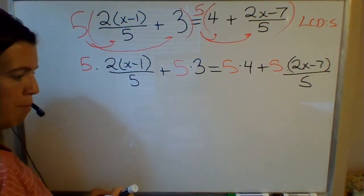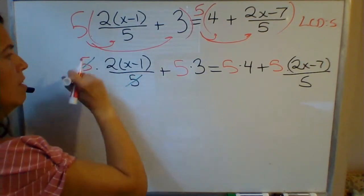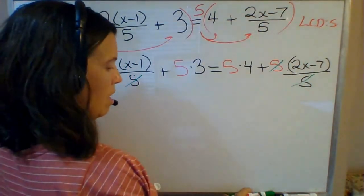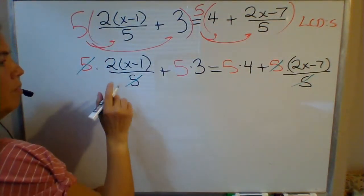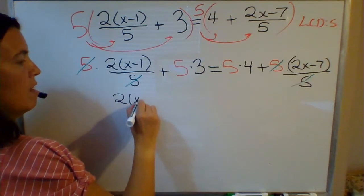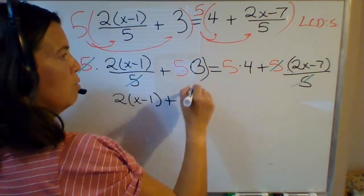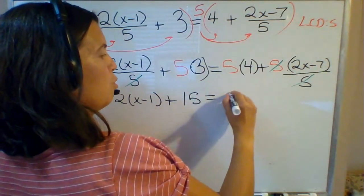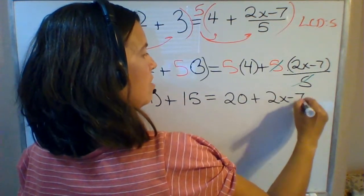Okay and then the fun part. Now we get to cancel. 5 cancels here, 5 cancels here. We're left with 2 times x minus 1 plus 5 times 3. Maybe I should have written that in parentheses. This is 15 equals 5 times 4, so that's 20 plus 2x minus 7.